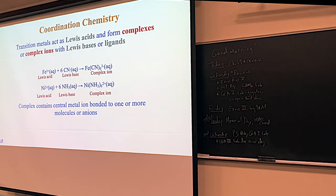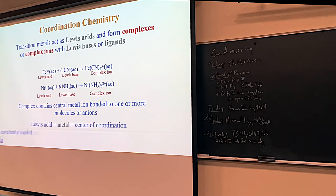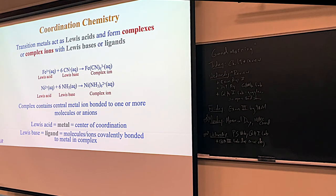A complex ion is part of a coordination complex. The important part is that the Lewis acid will almost always be a transition metal — nickel, iron, chromium, zinc, et cetera. And the Lewis base will be the other part.